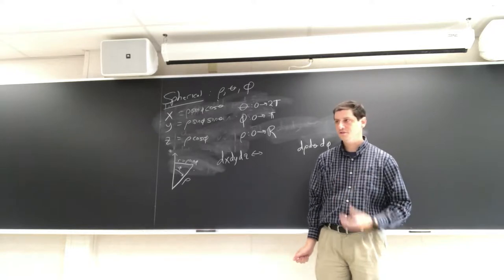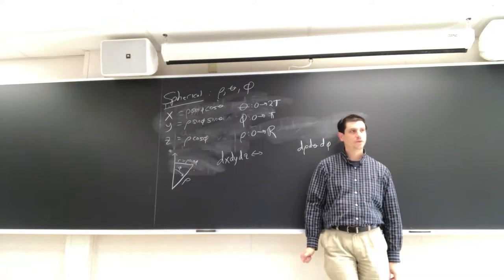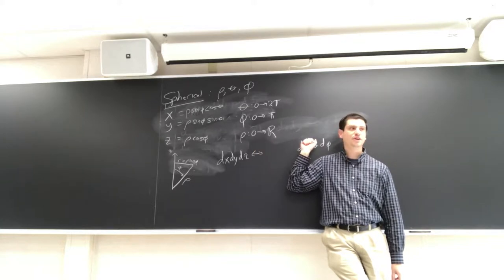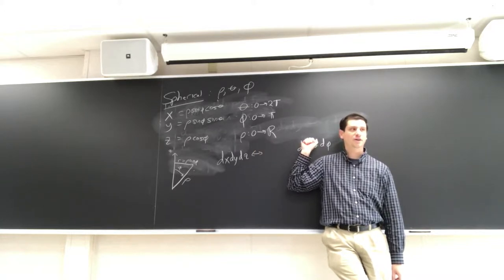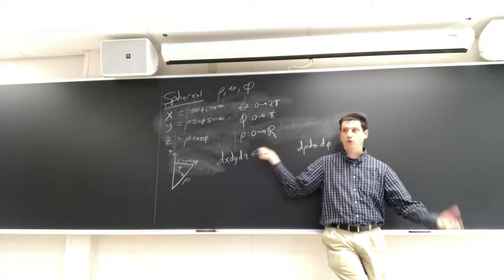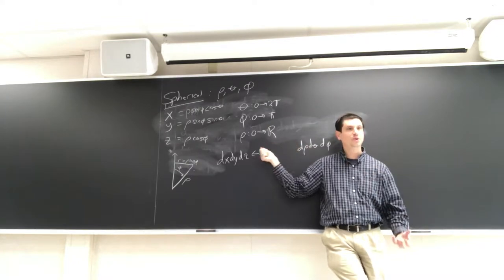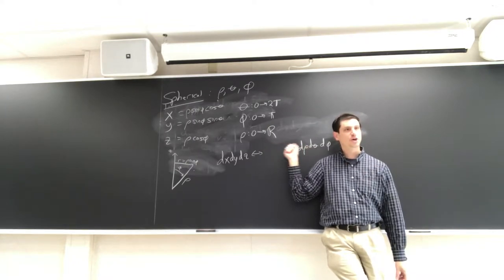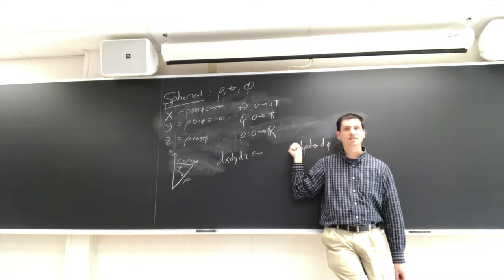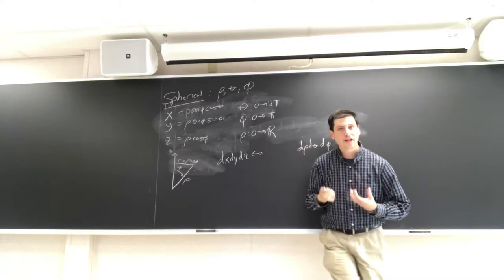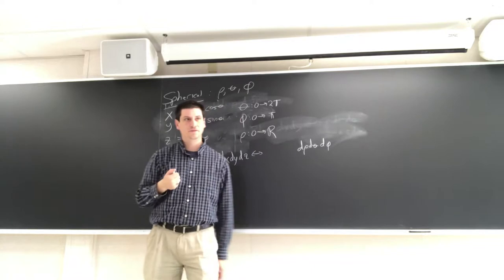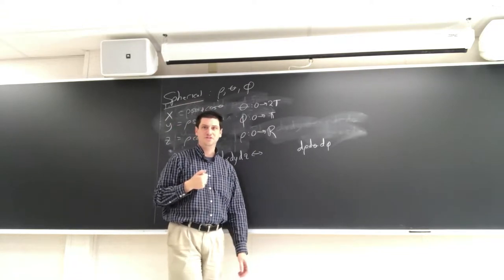You should know what the spherical change of variables is and what the determinant is — you've watched the video, read the book, you know the answer. Looking at this, which part do you think is easier to understand or give an explanation for where it comes from?